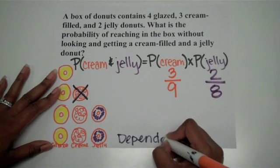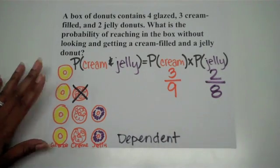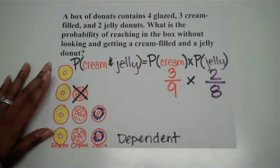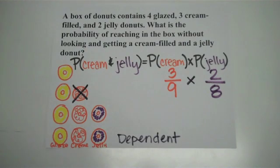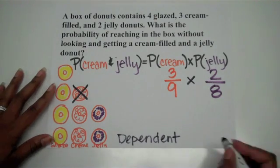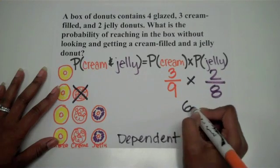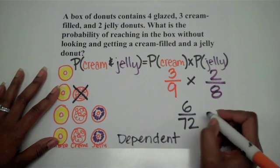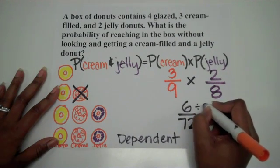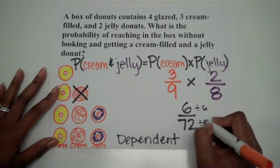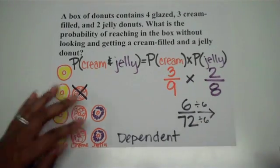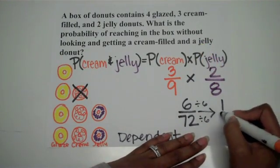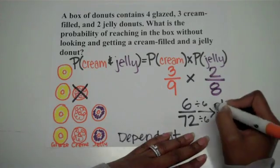Because what happens on the first event affects the outcome of the second event. I still find my probability by multiplying straight across: 3 times 2 is 6, and 9 times 8 is 72. Simplifying by dividing by 6, the probability of getting a cream filled and a jelly donut is 1 out of 12.